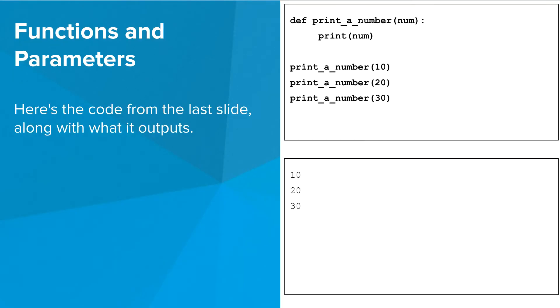So let's take a closer look. Here's the code from the last slide along with what it outputs. Notice that we call print_a_number three times, the first time using 10, the second time using 20, and the third time using 30. Each time it takes that different value and prints it out.